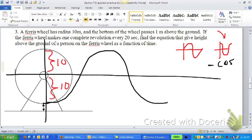And since the wheel we said passes 1 meter above the ground, at the highest point, we can say this is 21. And then the lowest point down here, we can say this is going to be 1.